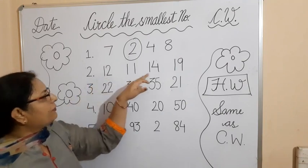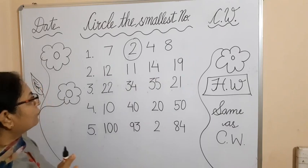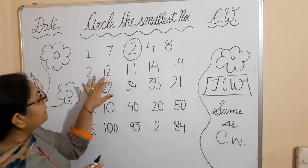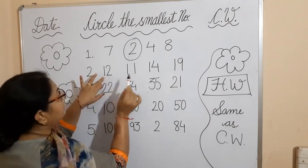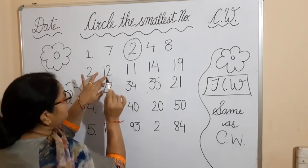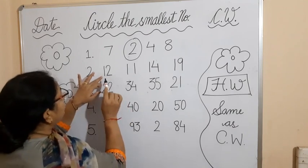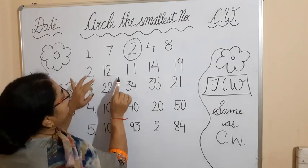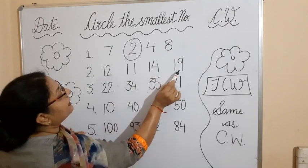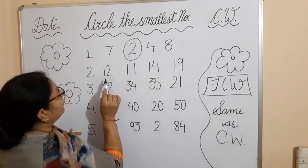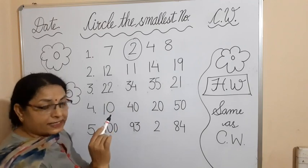For the next example I am going to give you numbers in two digits. First of all you have to compare the tens place. The tens place means the first digit of the number is called the tens, and the second digit is called the ones. So here look at the tens: 12, 11, 14, and 19. The tens digit is 1, 1, 1 — all the tens are the same.